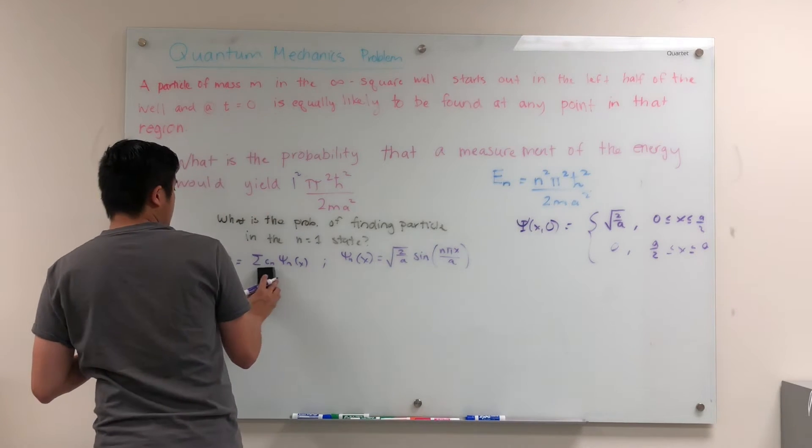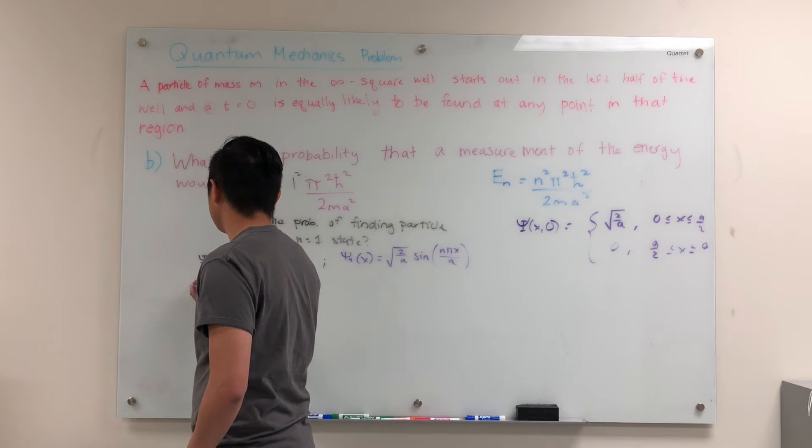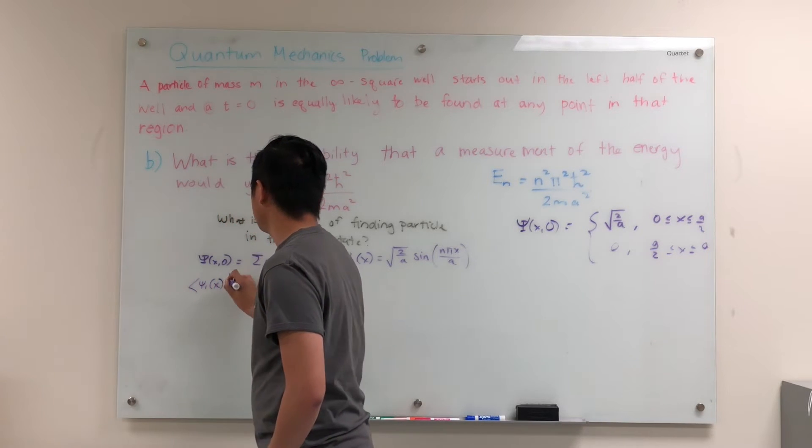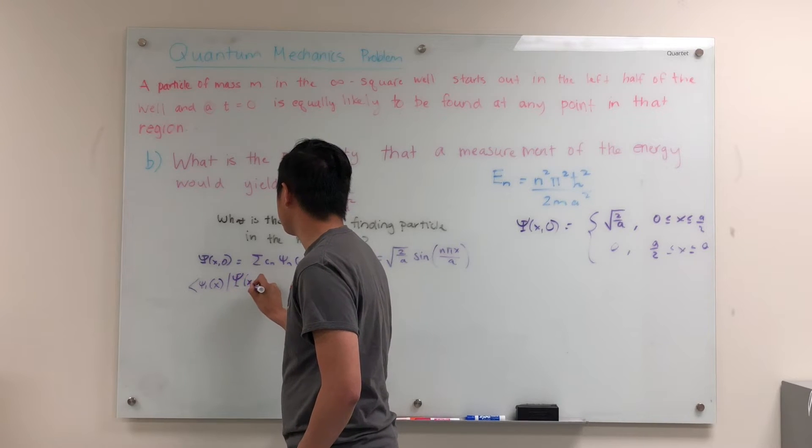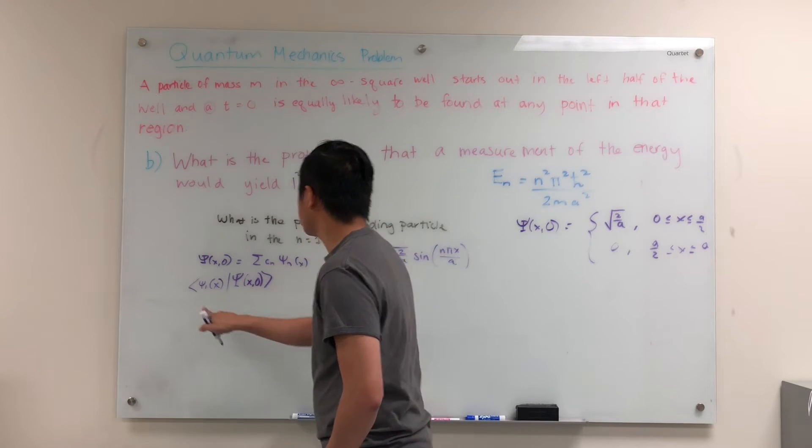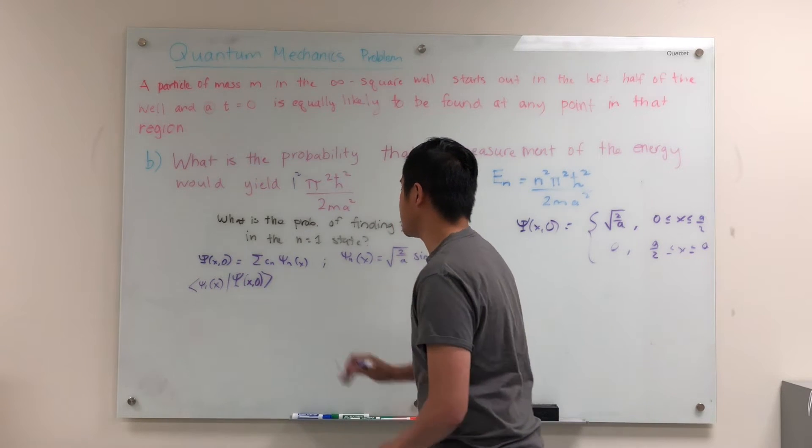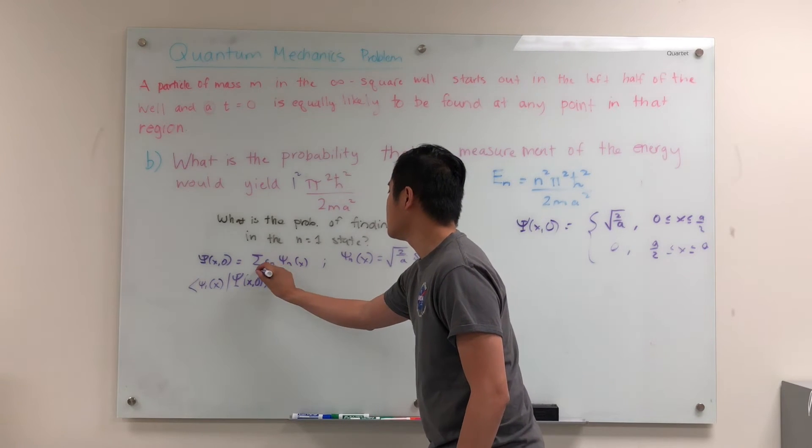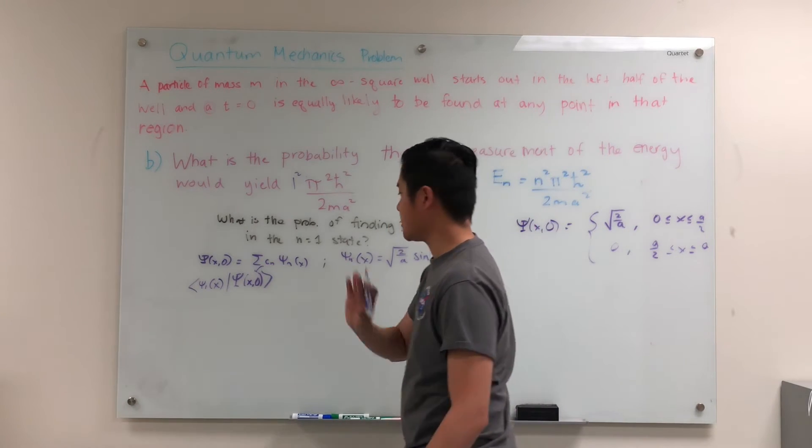essentially what we do is that we take this inner product, psi 1 of x, and we take it with psi x of 0. So we take this inner product. And what's going to happen is that if we just substitute the definition of psi x of 0 above as a superposition of states,